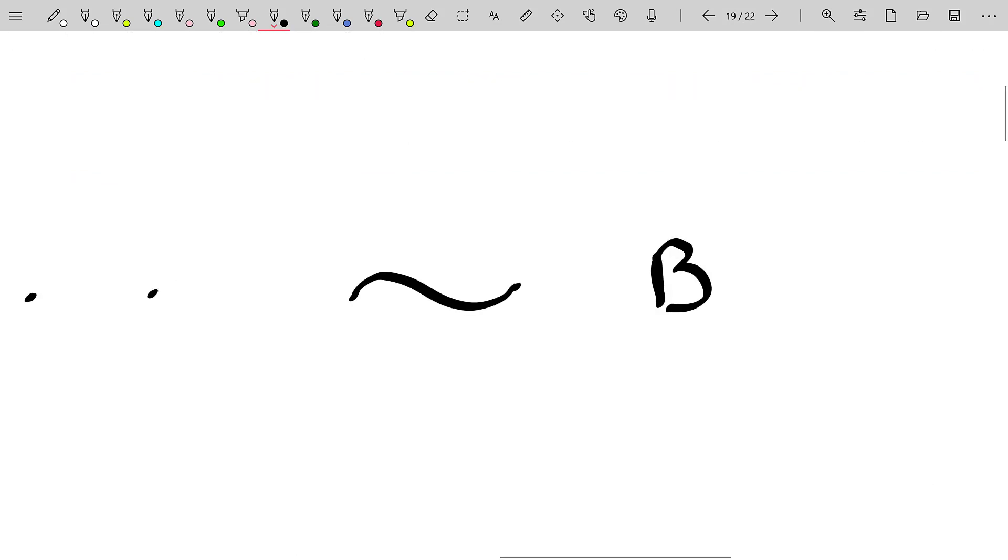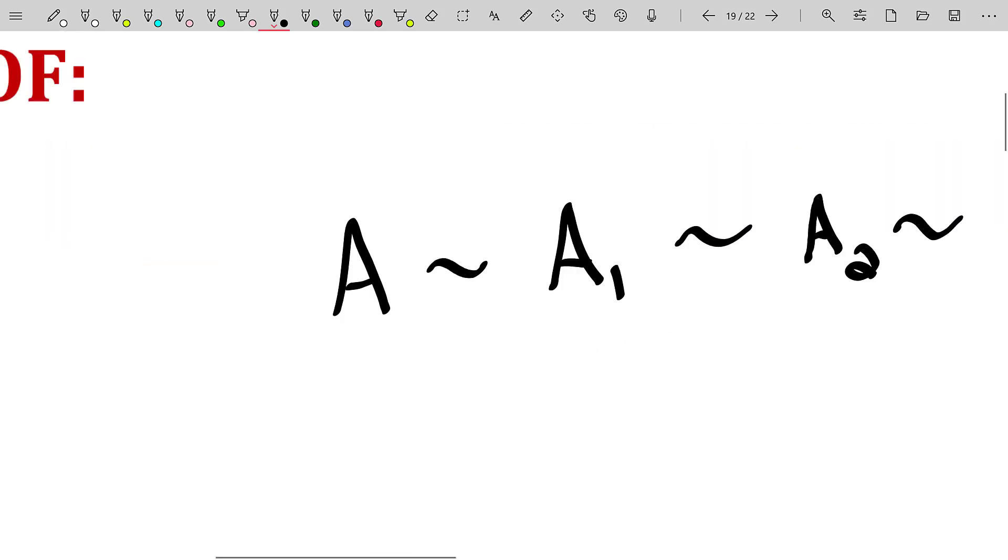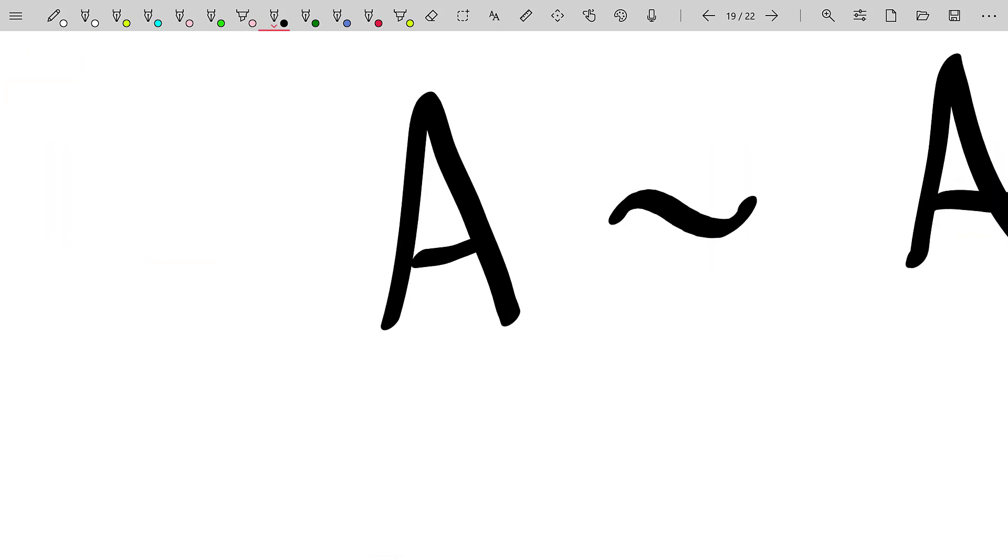Well, then you immediately know the linear systems that each of those represent have the same solution set. So if you know the solution set to B, or at least the linear system that B represents is empty, just visually, you can see that immediately. Then you immediately know, no matter how complicated A looks, that the solution set for its related linear system is also empty.